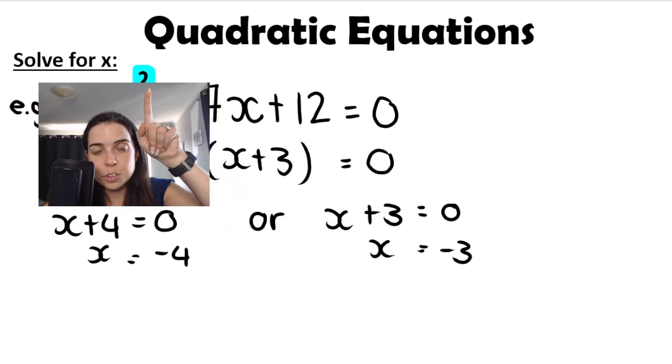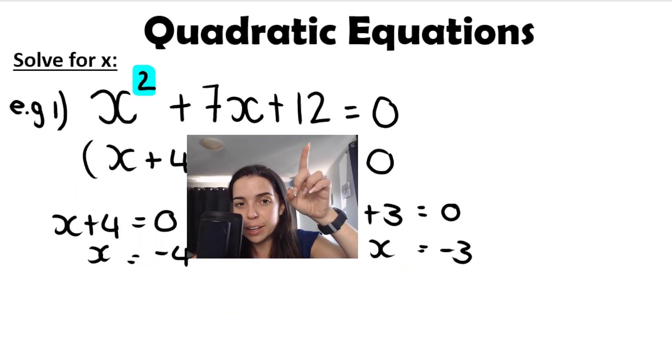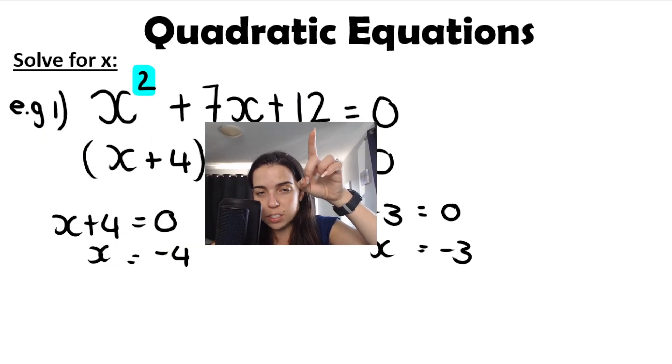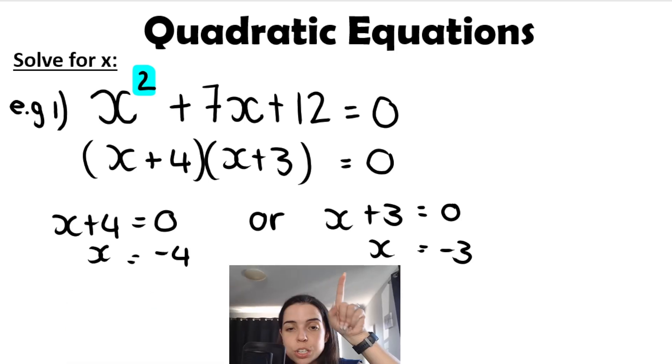We know it's quadratic if we see a squared term. We make it equal to zero in standard form with descending powers of x: x squared, then x to the power of 1, then the constant term. We factorize, make each bracket equal to zero, and we've got two solutions.